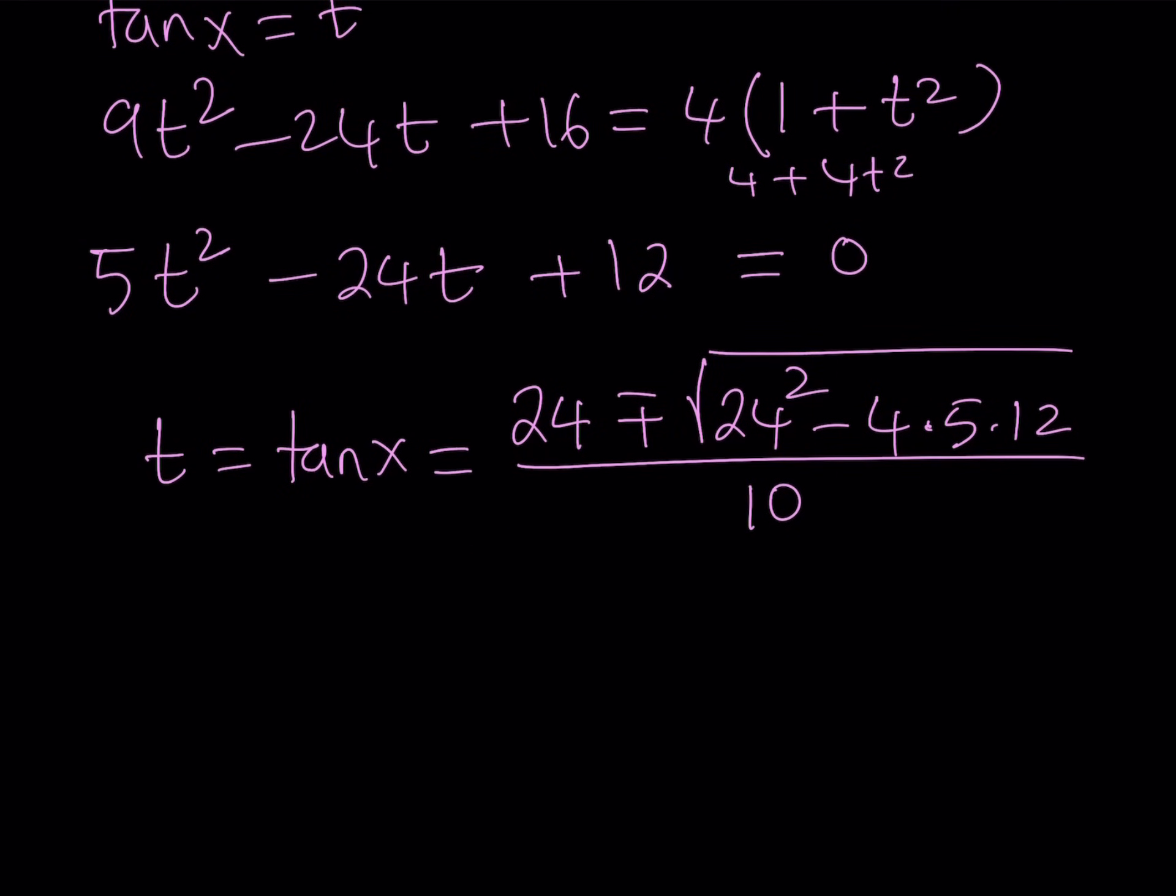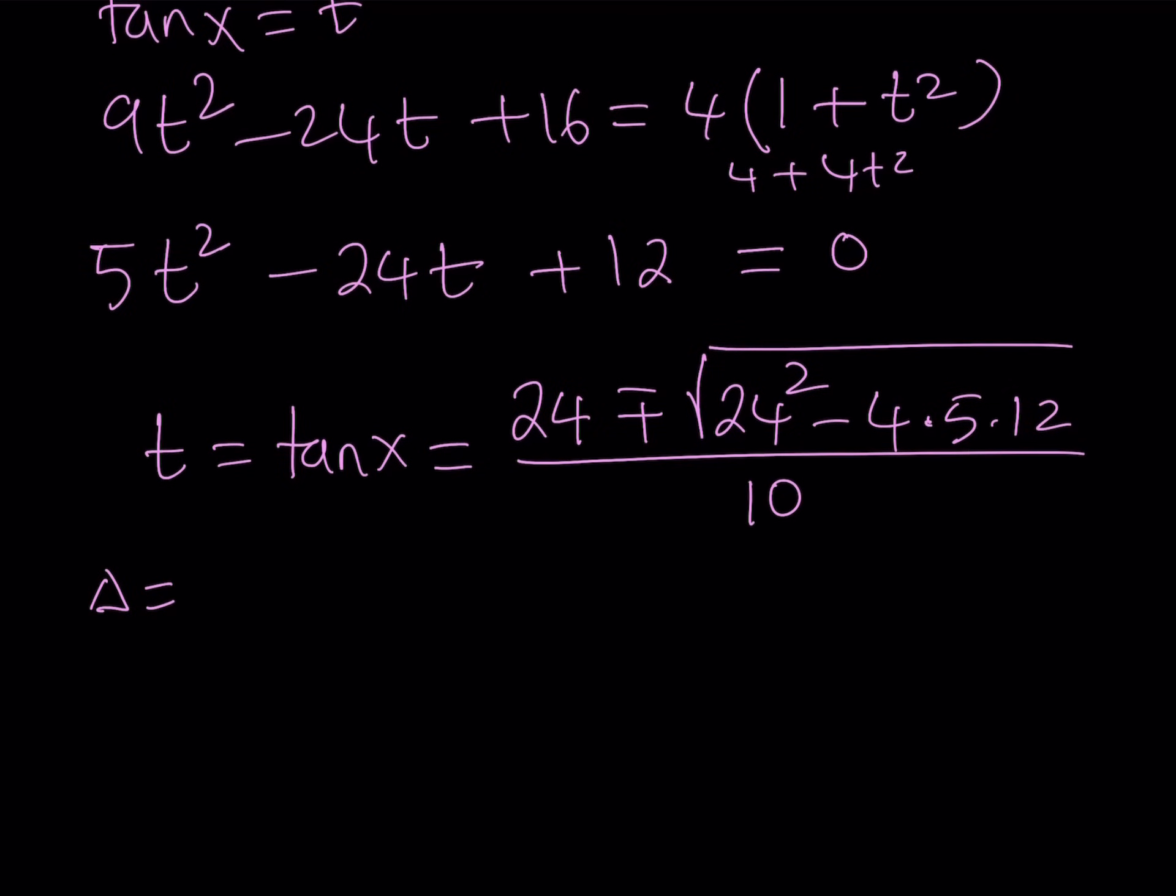You could also be looking for possible ways to factor it, but I don't think it's factorable. And also this is nice. I forgot to mention that. When we divide both sides by cosine squared, we get a quadratic equation in tangent x. And guess what? We are looking for tangent x. So that makes sense, right? Great. So let's go ahead and do it. So from here, if you use the quadratic formula, t equals tangent x. And that is equal to negative b, which is 24, plus minus the square root of b squared, which is 24 squared, minus 4 times 5 times 12.